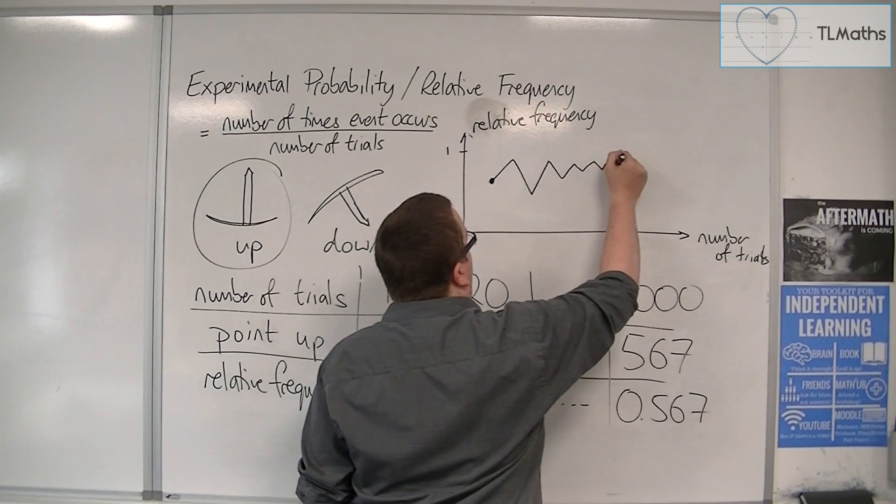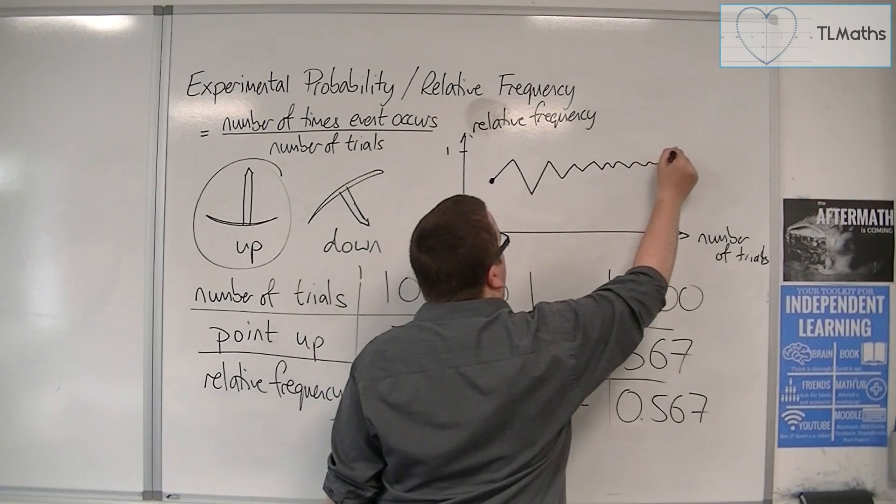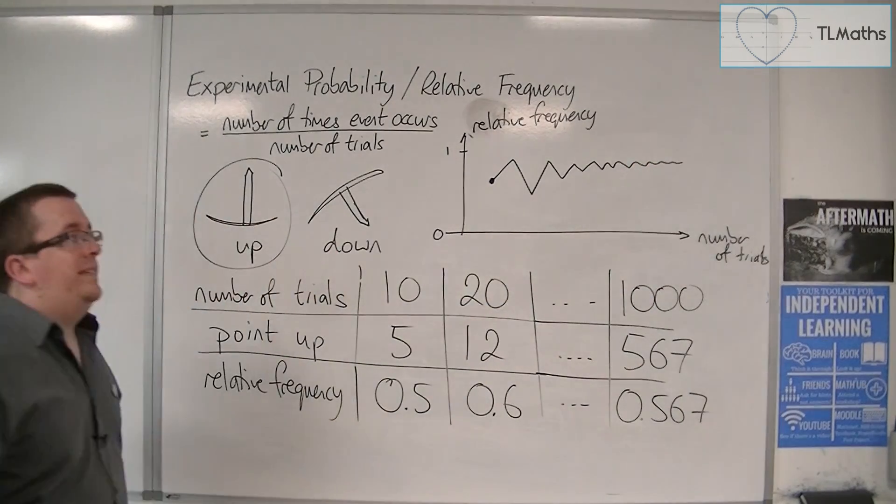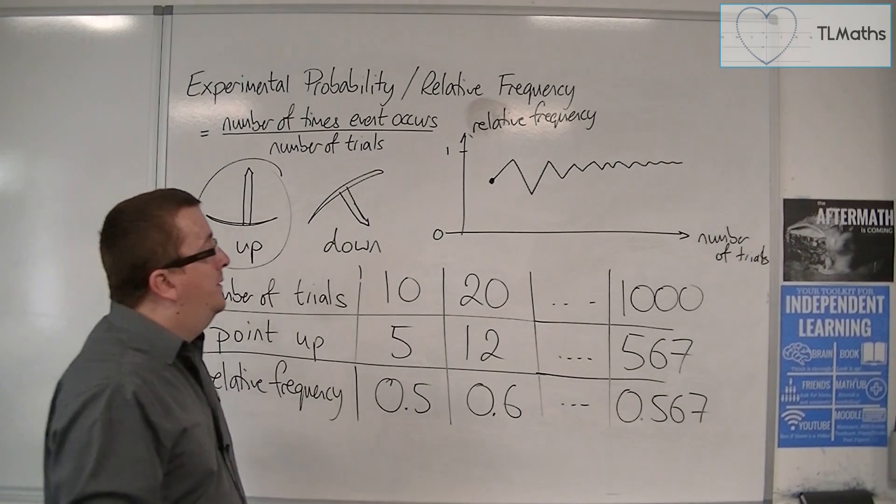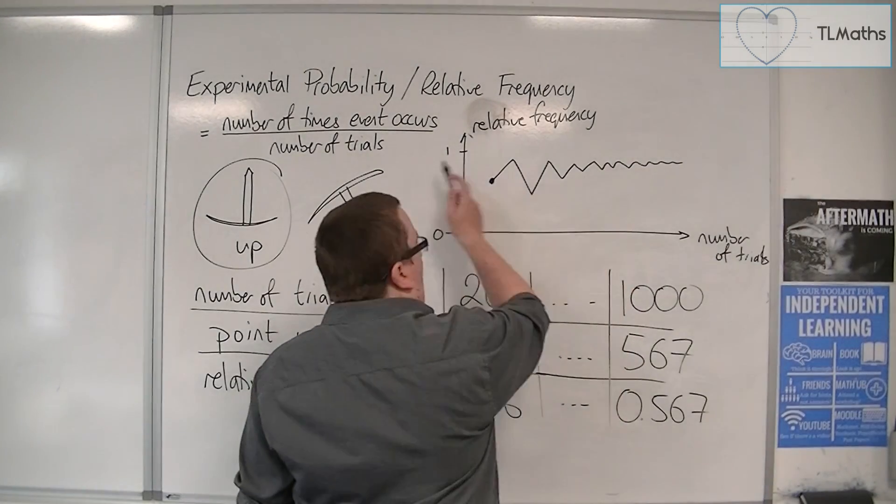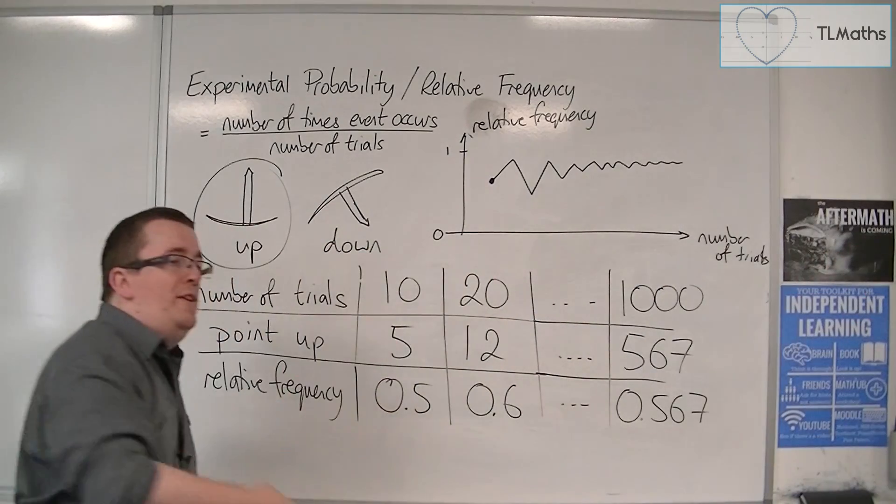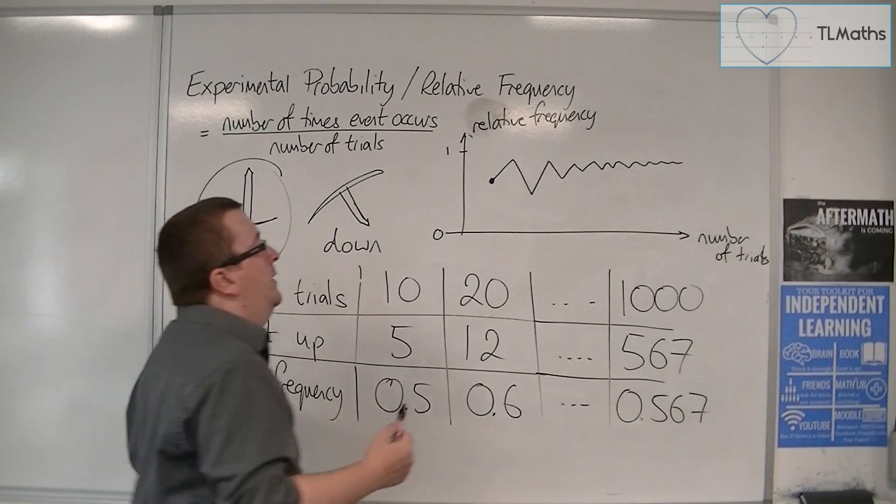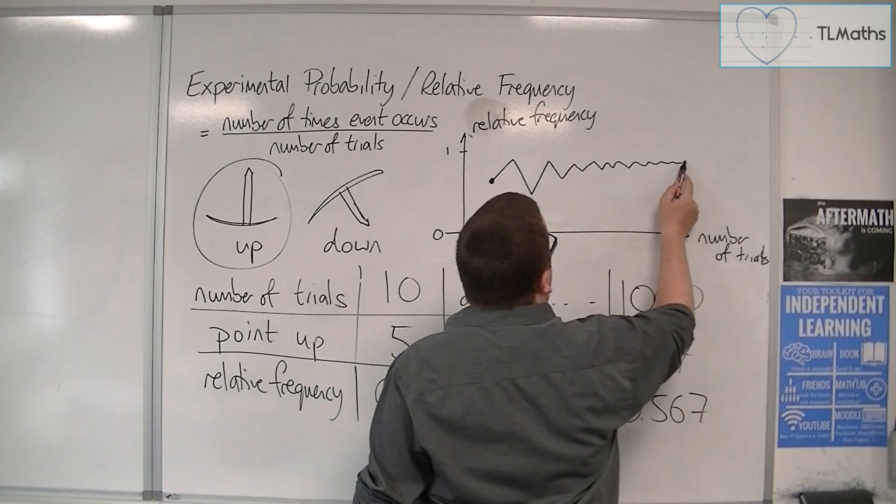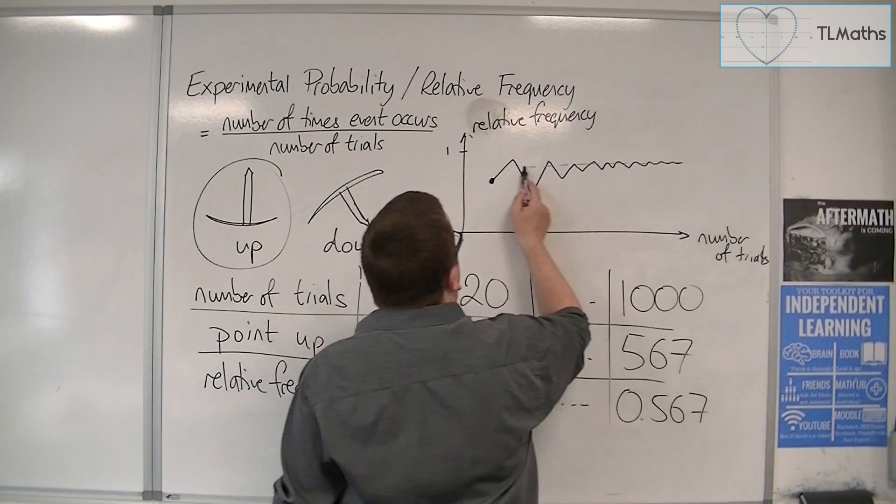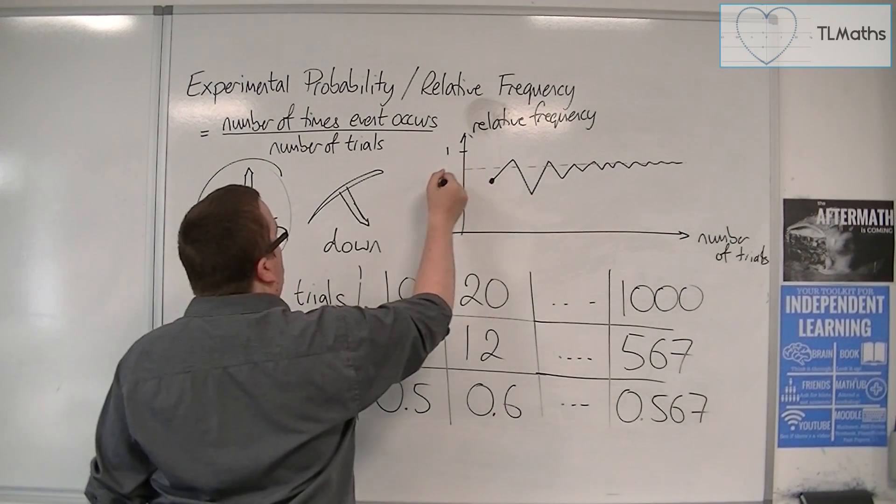And what you should find is that, eventually, the zigzags get closer and closer and closer together, hopefully, as you go further and further and further along, increasing the number of trials. And, effectively, that probability that you're homing in on is the experimental probability.